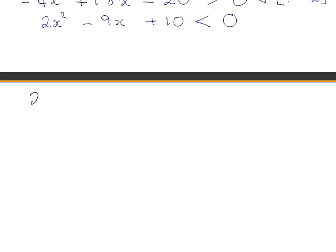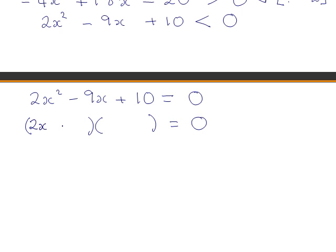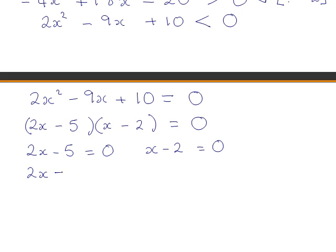Now we solve this quadratic inequality. The left-hand side is a u-shaped curve since the coefficient of x² is positive. To find the x-intercepts — where the curve cuts the x-axis — we set it equal to 0 and factorize. Solving gives: adding 5 to both sides and dividing by 2 yields x = 5/2; and adding 2 to both sides of the other factor gives x = 2. So the x-intercepts are at x = 2 and x = 5/2.